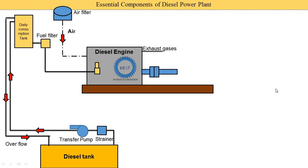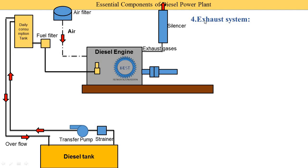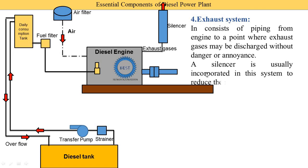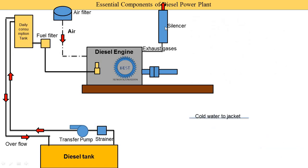The exhaust system works like our human body taking in oxygen and removing carbon dioxide. Fuel and air are supplied into the cylinder where combustion takes place. After combustion, some work is utilized from the gases and the remaining gases are exhausted to the atmosphere. The exhaust gas is supplied into the exhaust pipe, then through a silencer, and the exhaust gas goes to the atmosphere. A silencer is incorporated to reduce the noise level, and in some systems different mechanisms are used to reduce emissions.